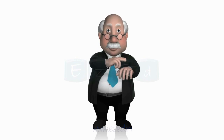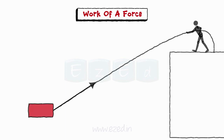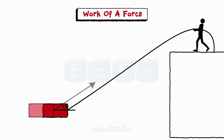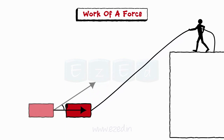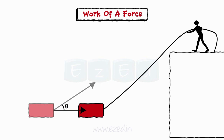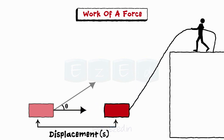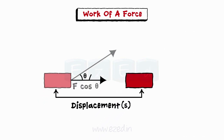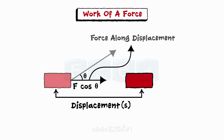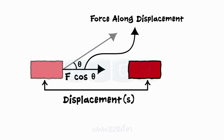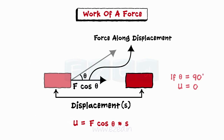It's time to concentrate now. How is work done by a force? Consider a force on the block acting at an angle theta. This force causes the block to displace by distance s. Work done is calculated in the direction of displacement. Therefore, work done by force is F cos theta into s. Work will be zero if theta is 90 degrees.